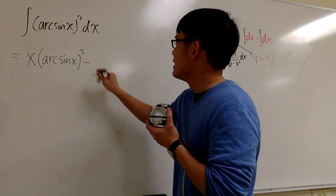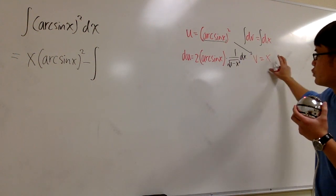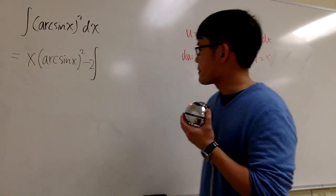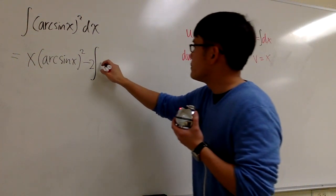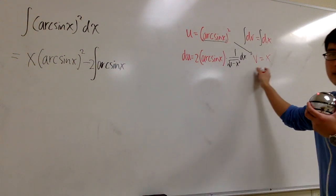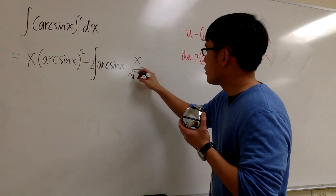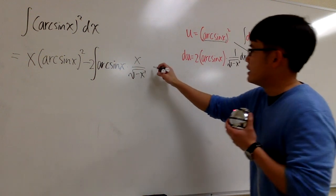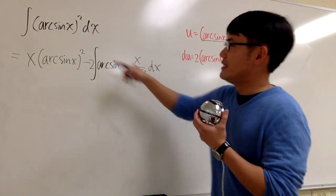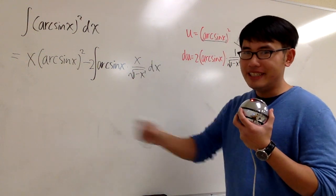Then minus the integral — the product of each row. I'll put a 2 in front of the integration sign, then arc sine x, and multiply with x over square root of 1 minus x squared, then dx. You may be wondering this looks even worse than the original, but this is just a procedure — in fact, it's also doable with integration by parts.